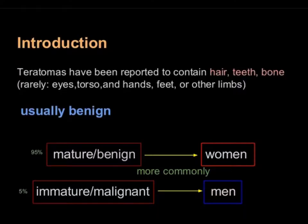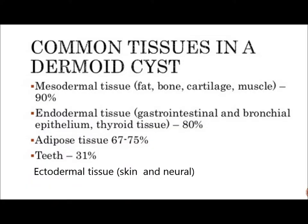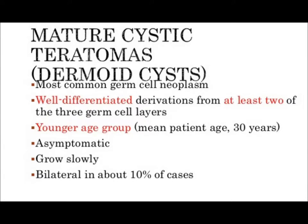Usually they are cystic and mature in females, and they are immature and malignant in men. Common tissues in dermoid cysts are fat, bone, cartilage, gastrointestinal and bronchial epithelium, adipose tissue, teeth, skin, and neural tissue. They are well differentiated. Dermoid cyst is the name if they are cystic in nature.